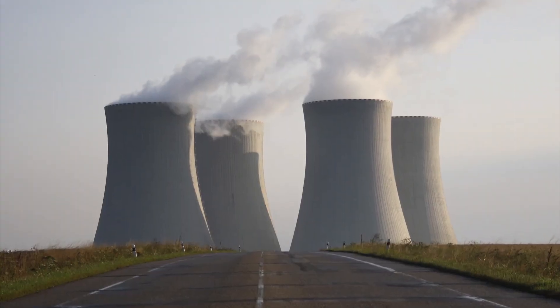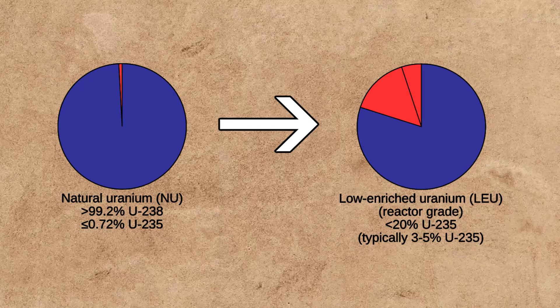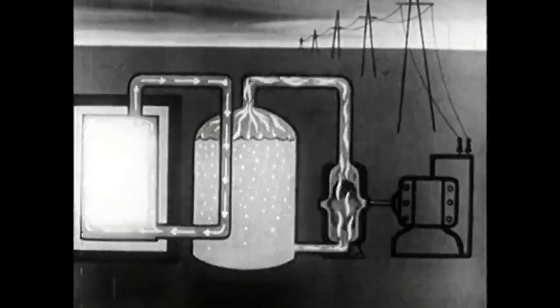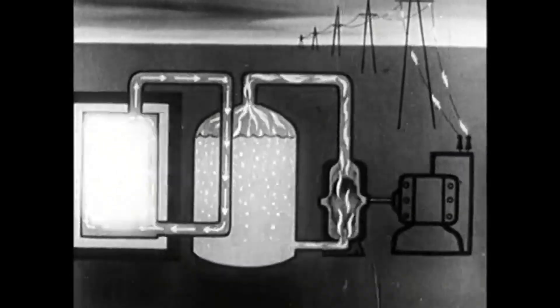To use it in a reactor it has to be enriched, meaning they increase the concentration of U-235 from 0.7% to 3% to 5%. This makes it usable for steady power generation.